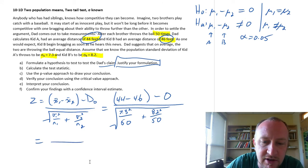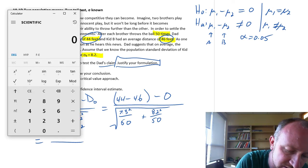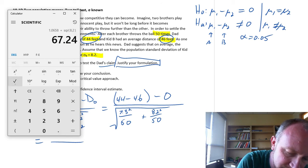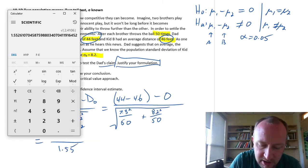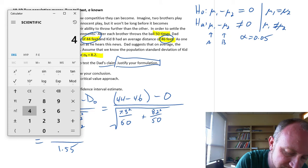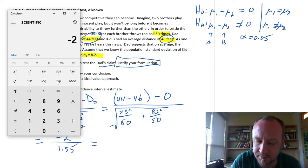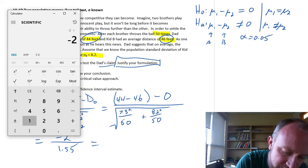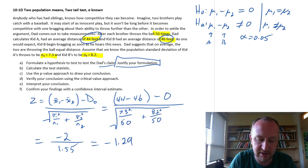Now again, I'm going to calculate the denominator first. I find that's easier. You can do whatever works best for you. 7.3 squared divided by 50 plus 8.2 squared divided by 50, square root equals 1.55. And my numerator, well that's just negative 2, 44 minus 46. So this is then going to be negative 2 divided by 1.55, which equals negative 1.29. There's our test statistic.